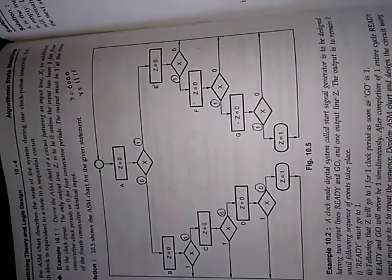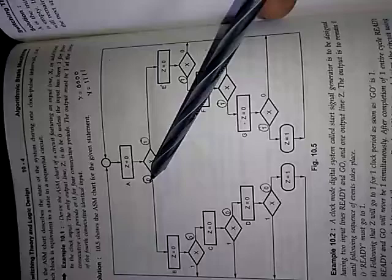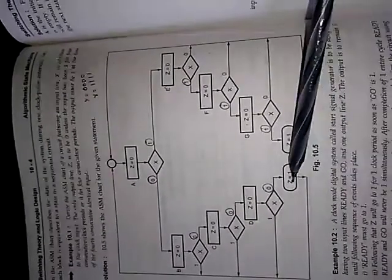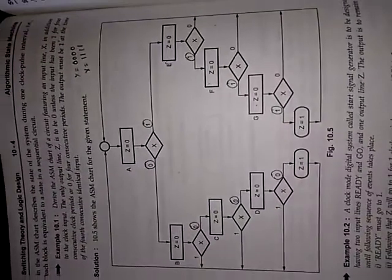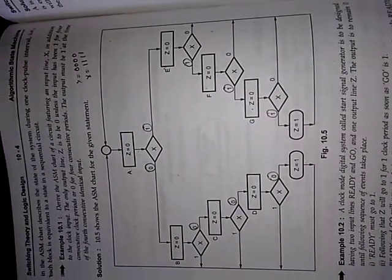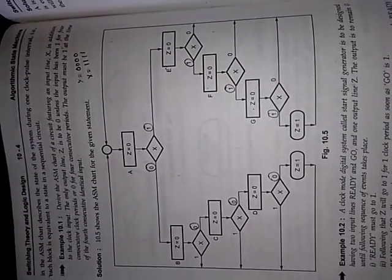The output must be one at the fourth consecutive identical input. Don't confuse with state box and conditional box. State box is rectangular in shape and conditional box will be oval surrounded. Practice this problem. If you have any doubts you can post in the comment section below. Thank you all.